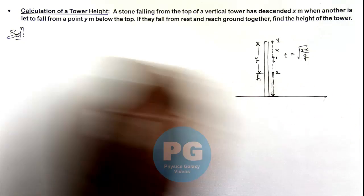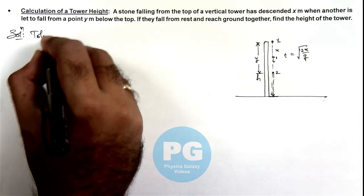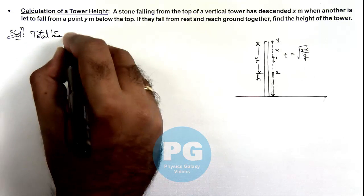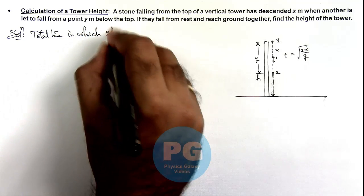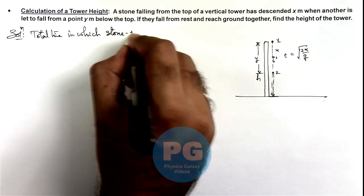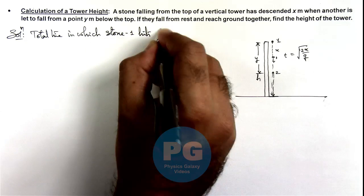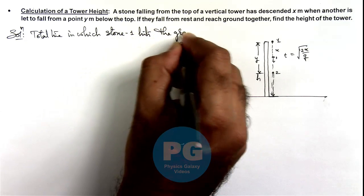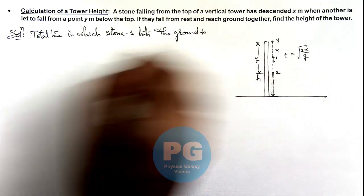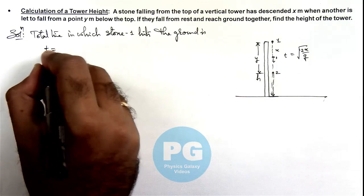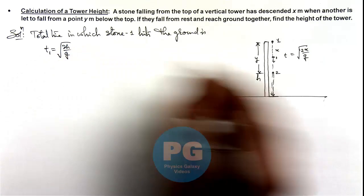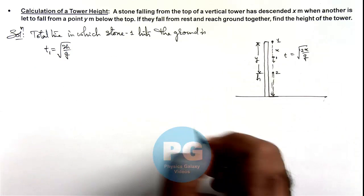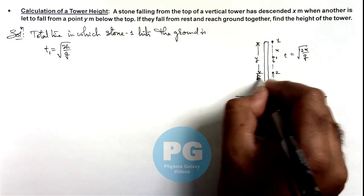So in this situation we can say total time in which stone 1 hits the ground is this total time for the stone 1 hitting the ground is root 2h by g, because it is freely falling from rest by height h.